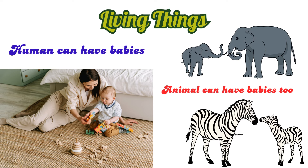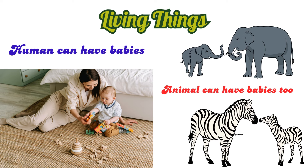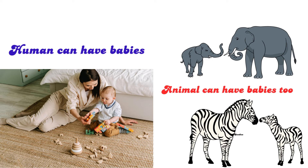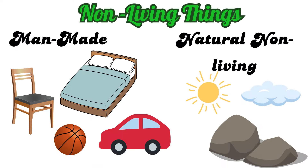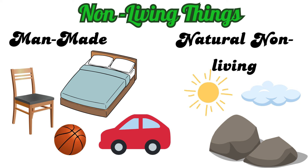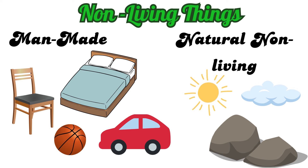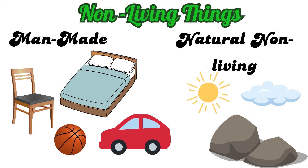So all the mammals, animals, even insects — they all can have their young ones. While non-living things such as rocks, sun, and clouds are natural non-living things. And man-made things like bed, ball, car, and chair are also non-living things.